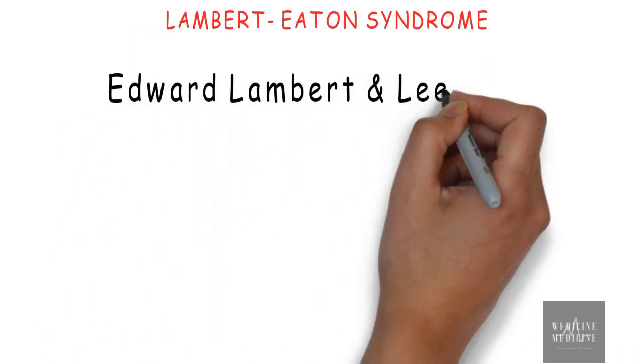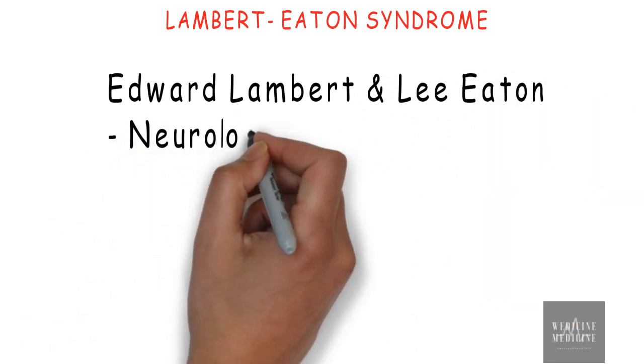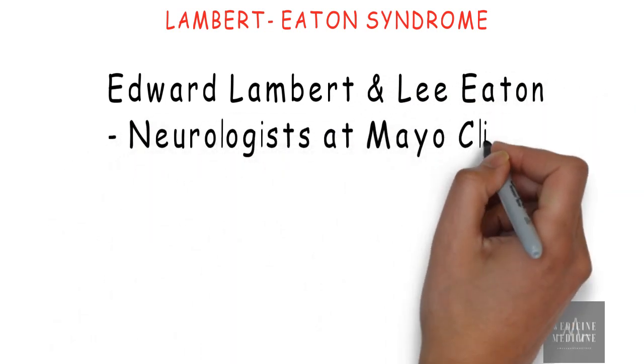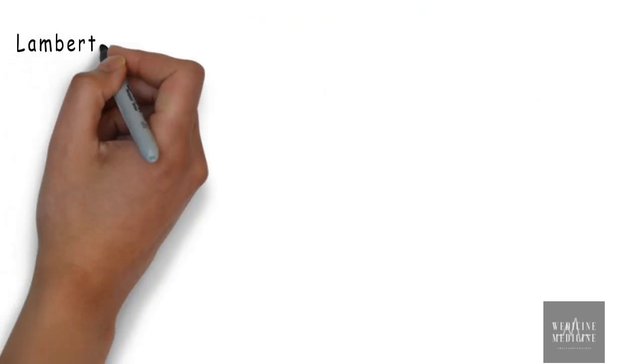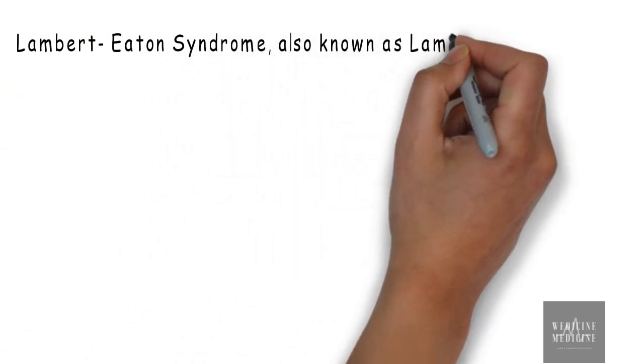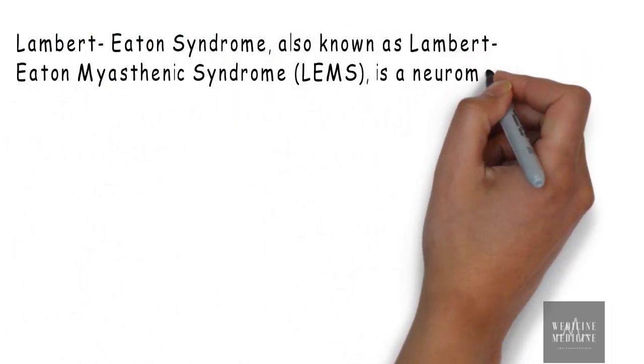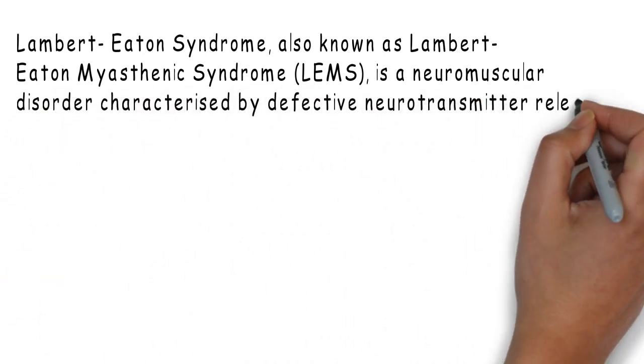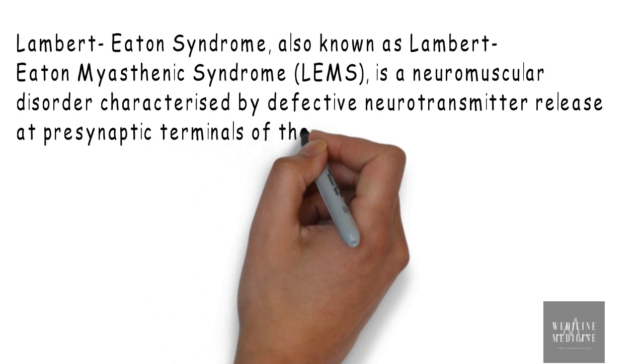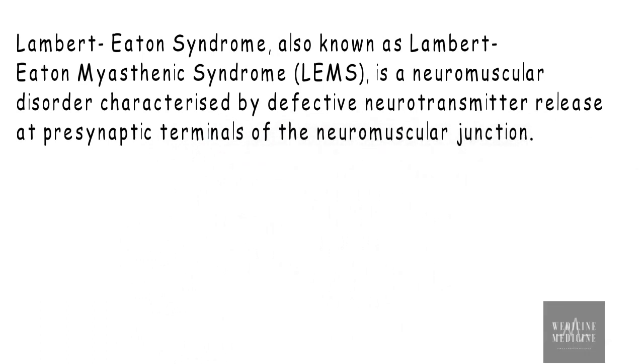The condition is named after two American neurologists, Edward Lambert and Lee Eaton, who first described clinical and etiopathological findings of this disease. Lambert-Eaton syndrome, also known as Lambert-Eaton Myasthenic syndrome, is a neuromuscular disorder characterized by defective neurotransmitter release at presynaptic terminals of the neuromuscular junction.